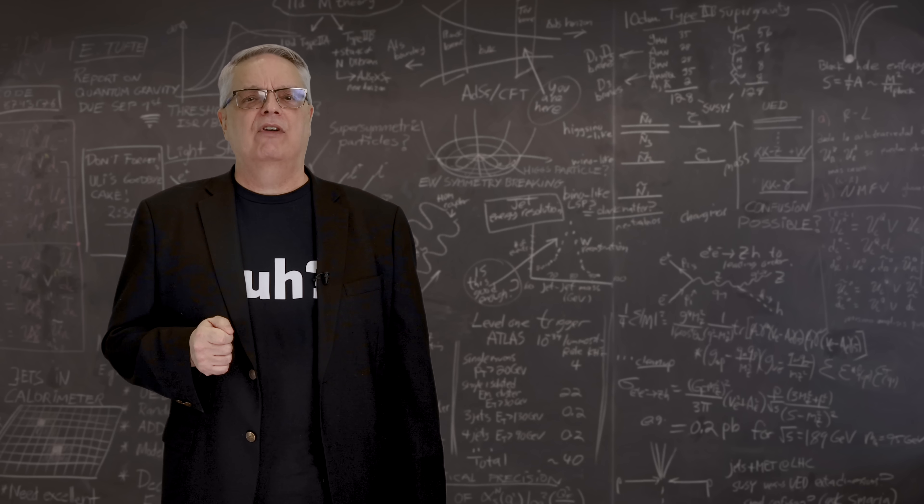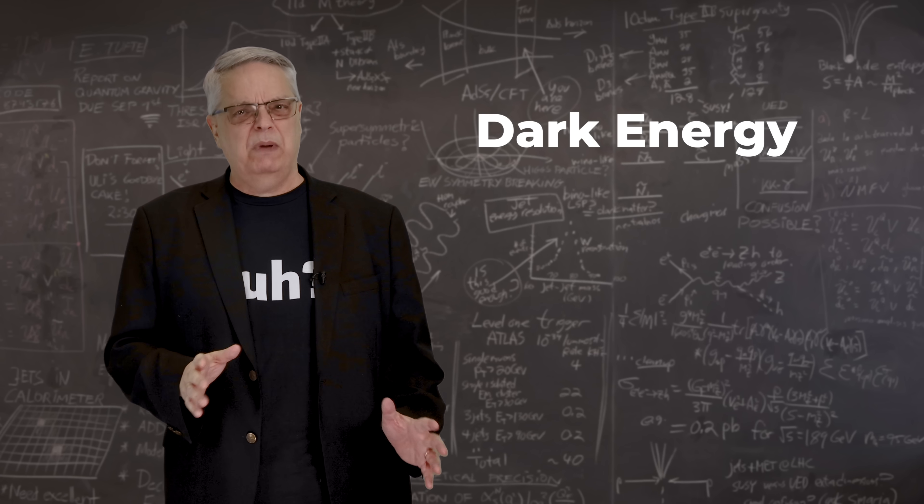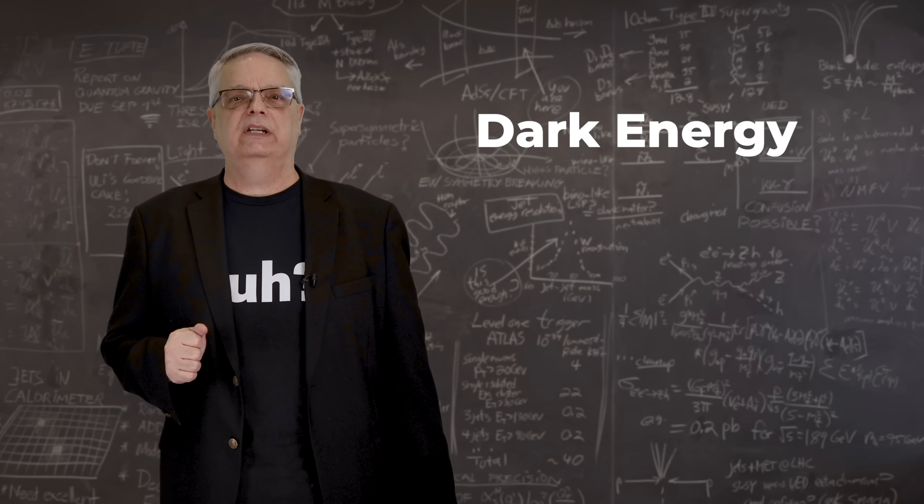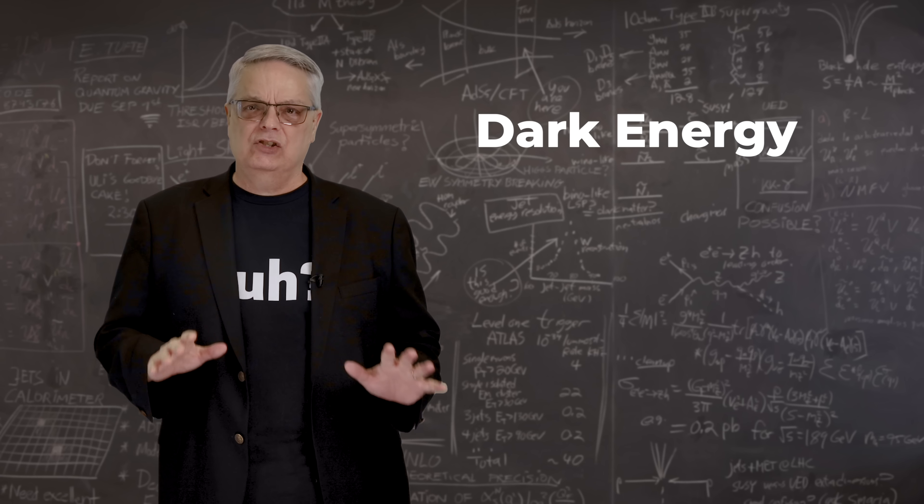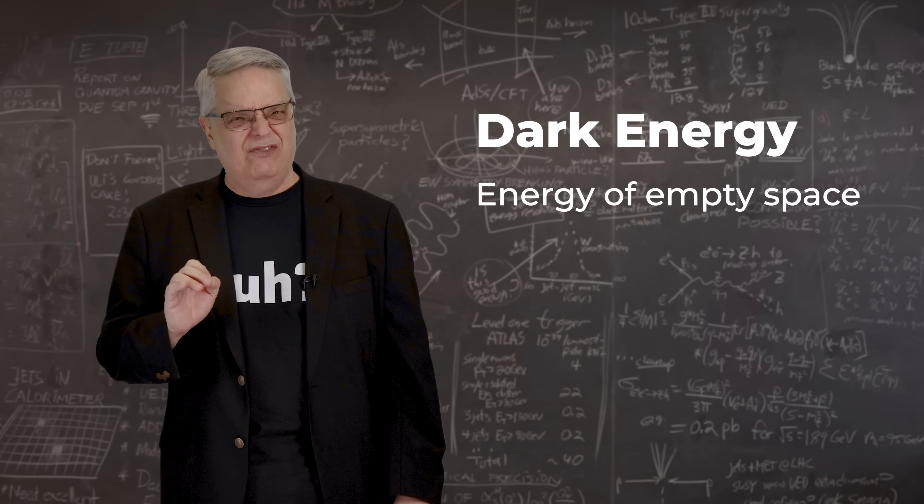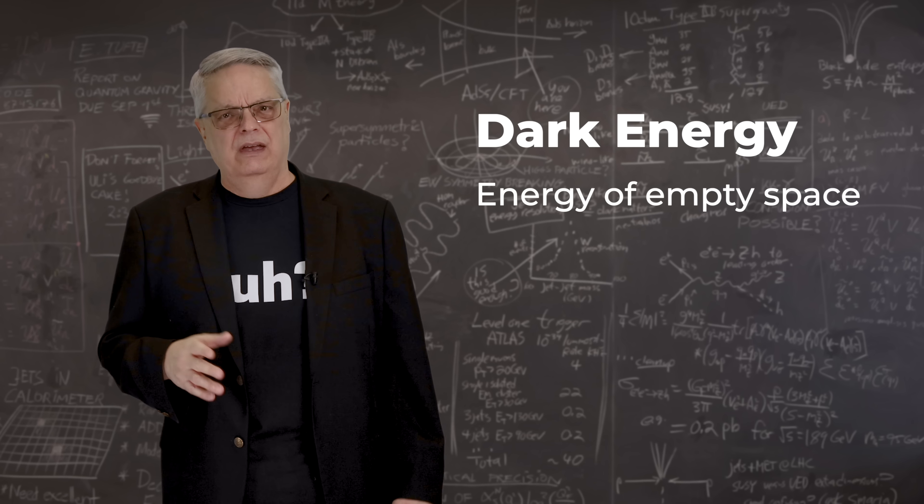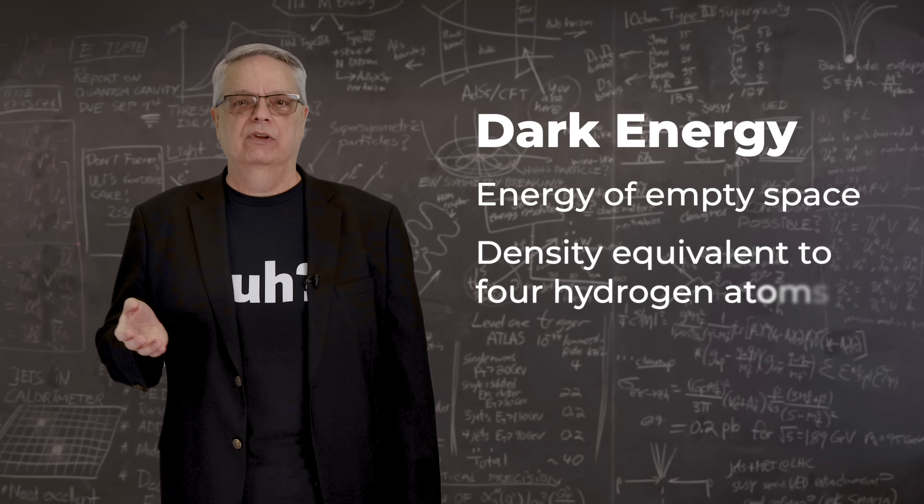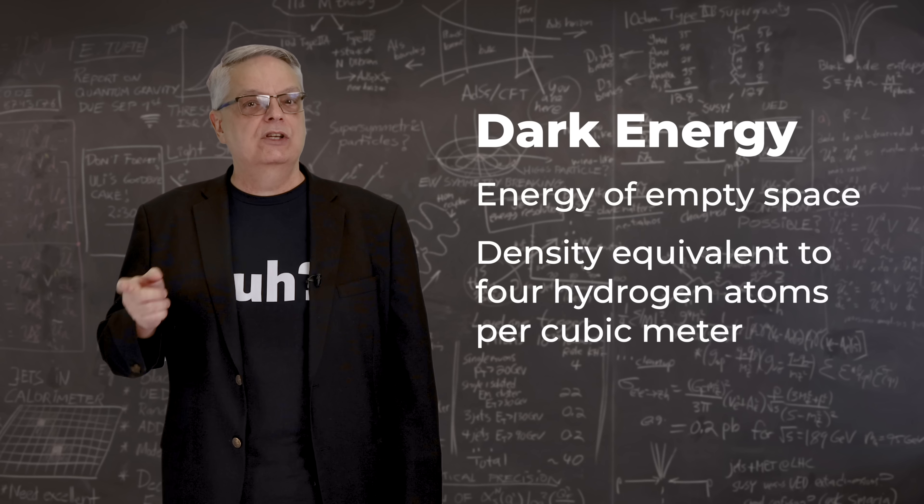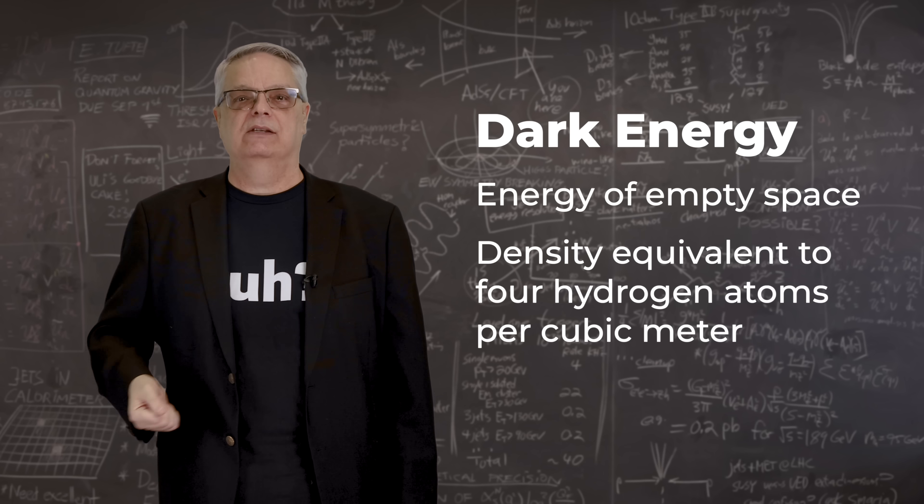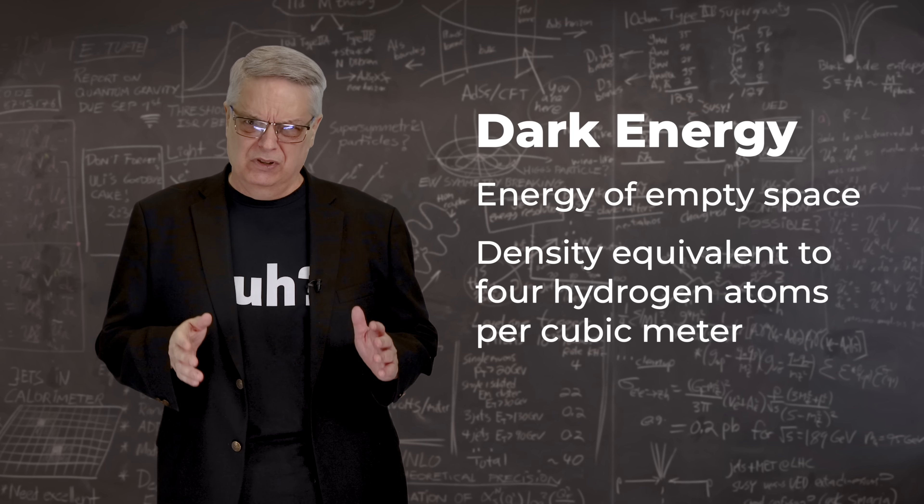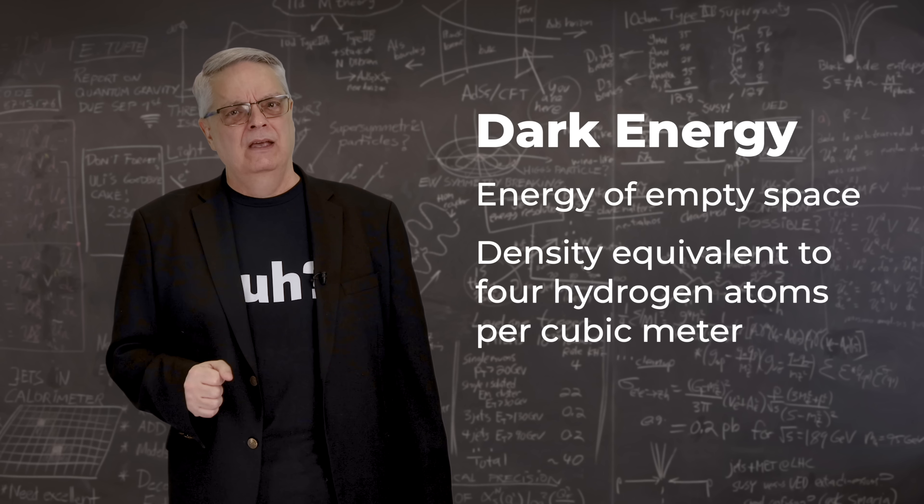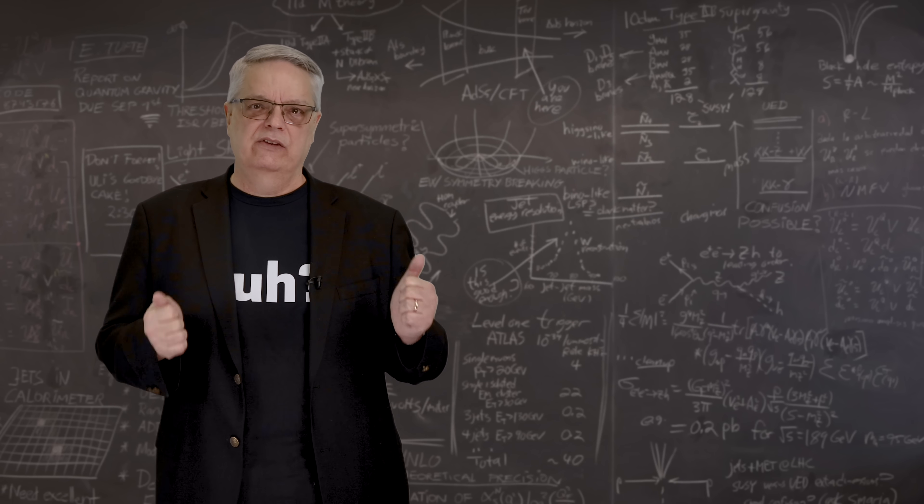The phenomena that provides this repulsion is called dark energy, and it's basically a repulsive form of gravity. Dark energy is essentially the energy of empty space, and it's very, very tiny. Converted to familiar units, dark energy is the energy equivalent of four individual hydrogen atoms per cubic meter of space. Dark energy is super, super tiny. Okay, that's what general relativity says.